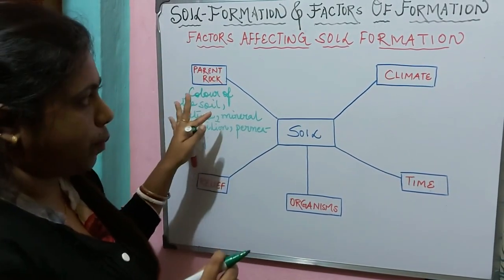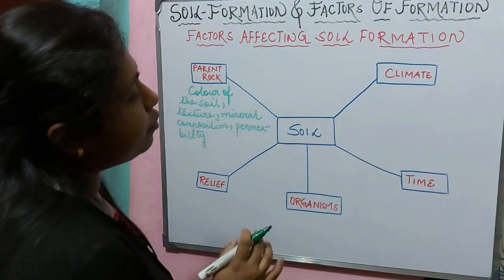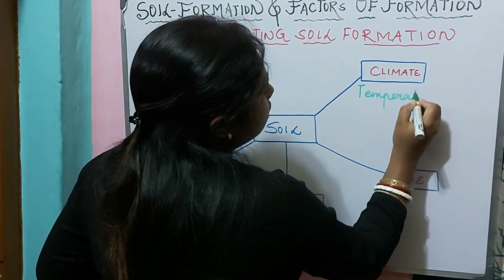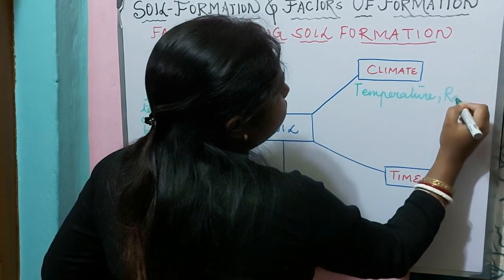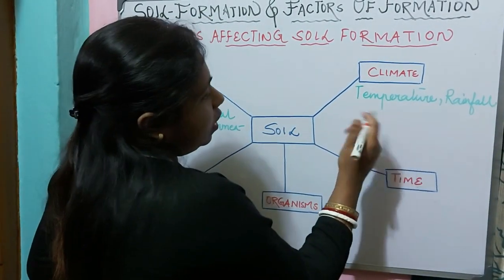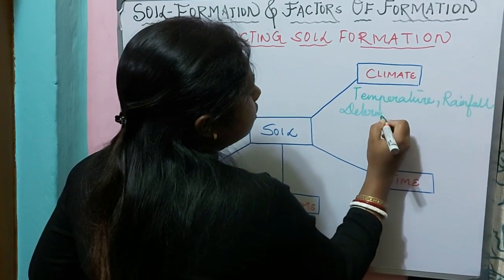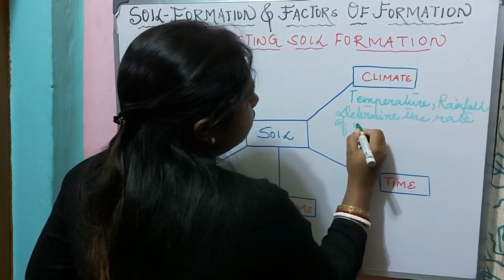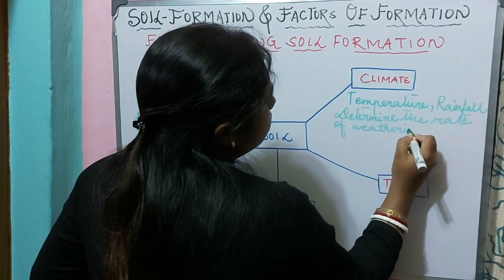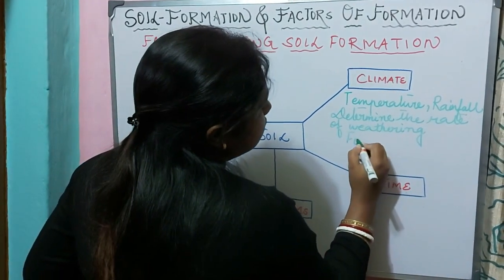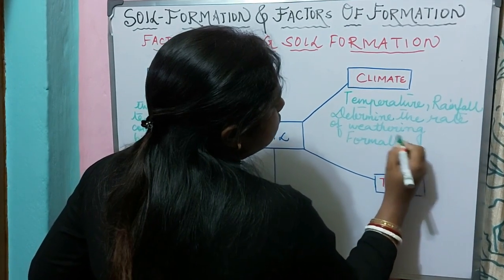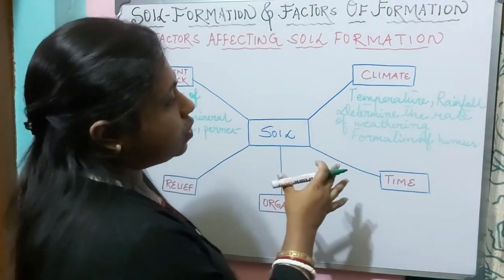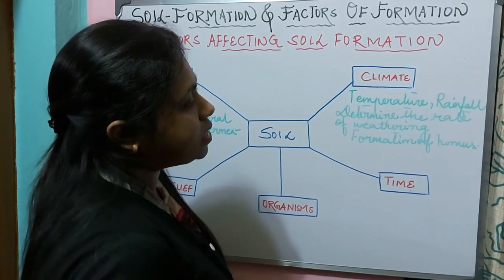Climate is the second factor that affects the formation of soil. Climate includes temperature and rainfall. Temperature and rainfall determine the rate of weathering and the formation of humus.